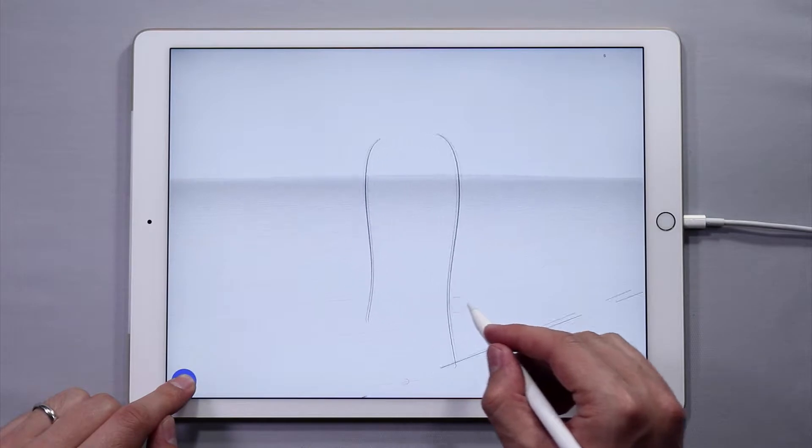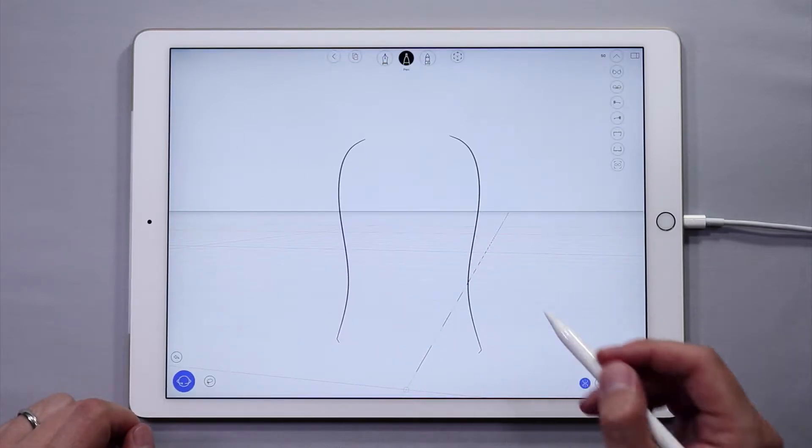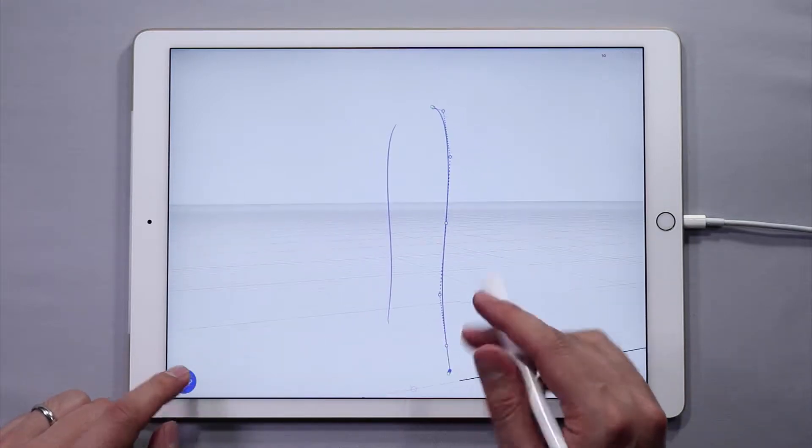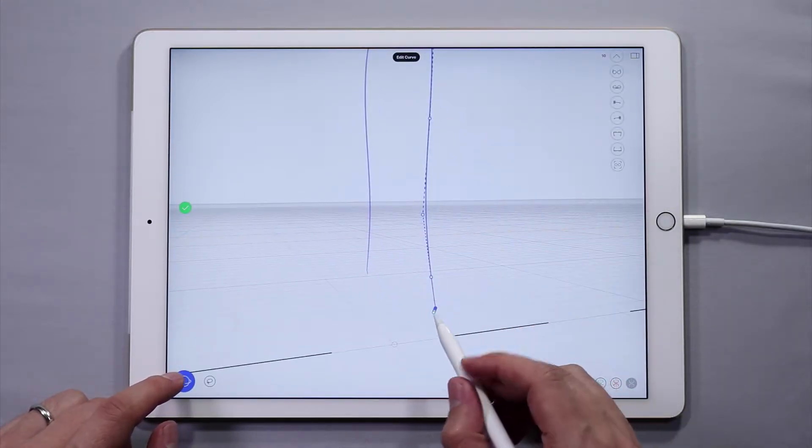And tap once on a curve to enable edit mode. The control points will appear. Now symmetry is on, so once in edit mode, tap and drag control points to edit the curve.